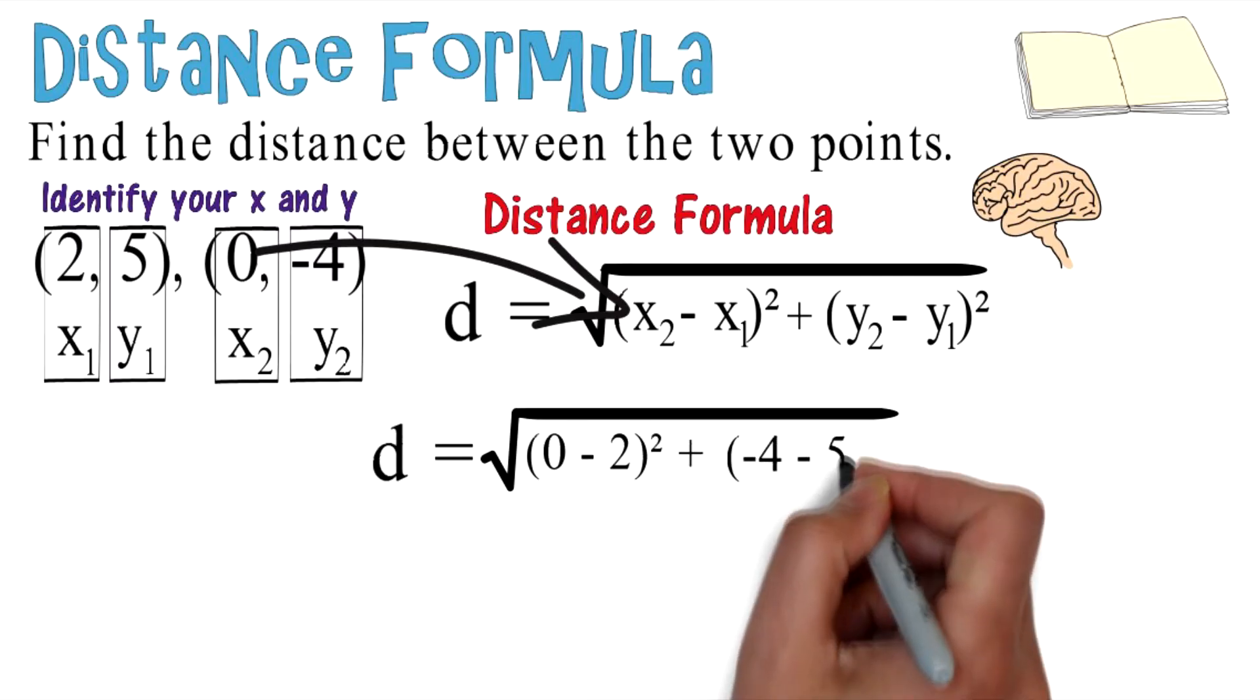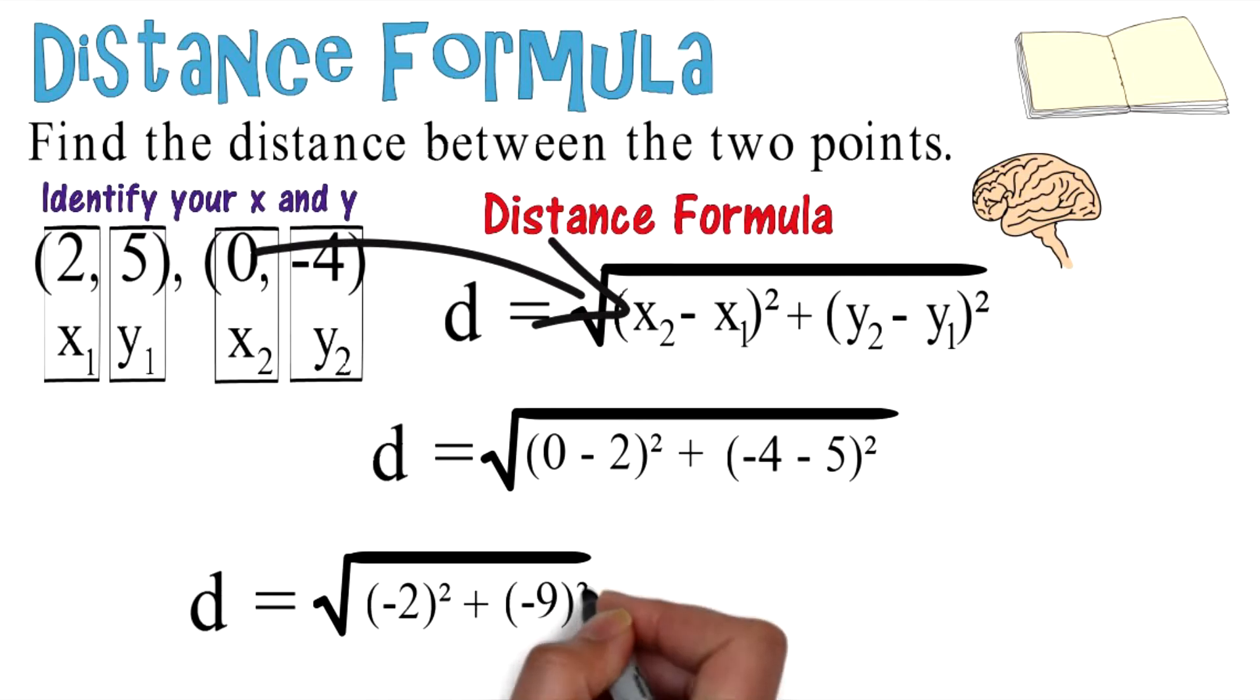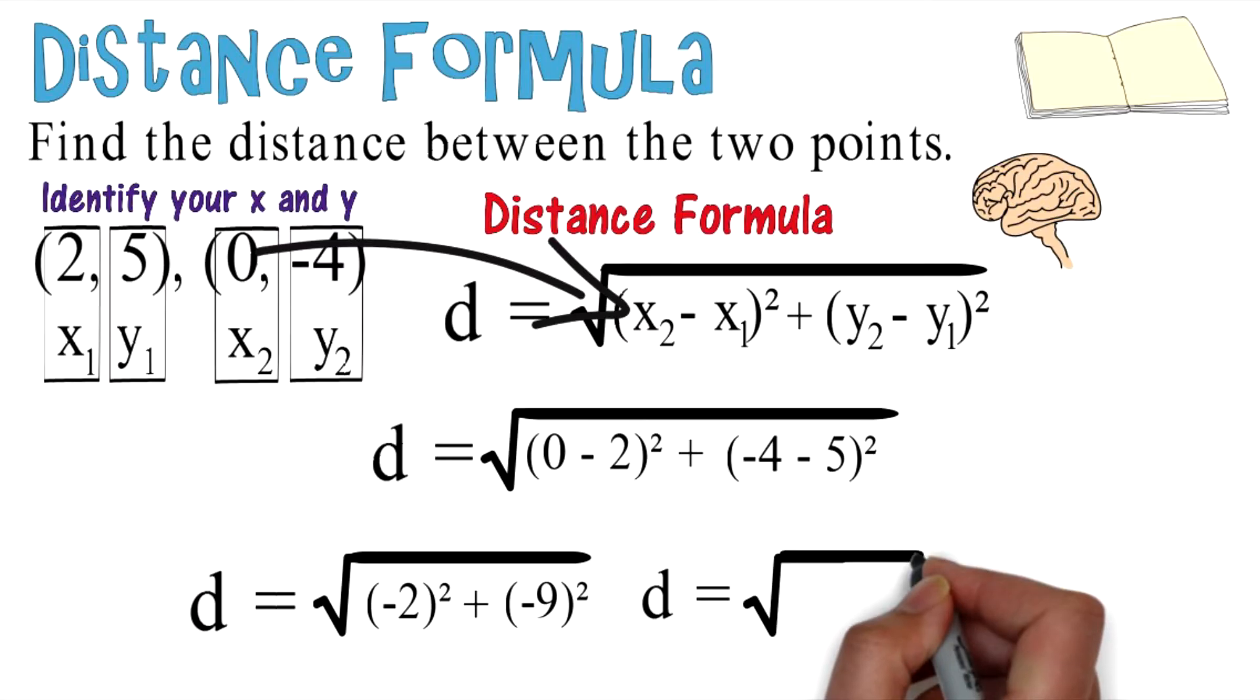You wind up getting distance equals the square root of (-2)² plus (-9)², because 0 minus 2 is -2 and -4 minus 5 gives you -9. Your distance eventually equals the square root of 4 plus 81.